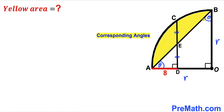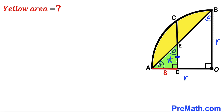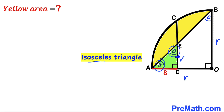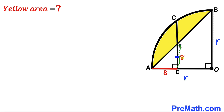These two angles are corresponding angles and are congruent, so if this angle is theta, this angle is theta as well. Focusing on tiny right triangle ADE, it is an isosceles triangle since both base angles are theta. Therefore side DE equals side AD. Since AD is 8 units, DE is 8 units as well.